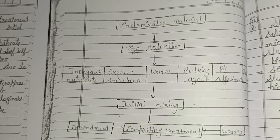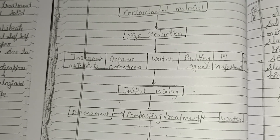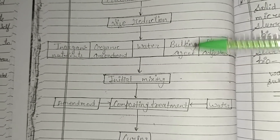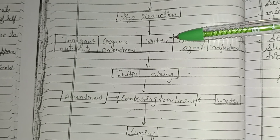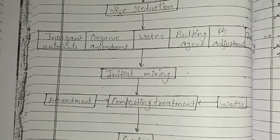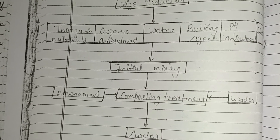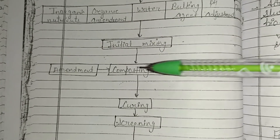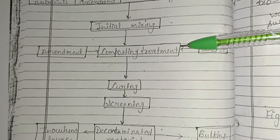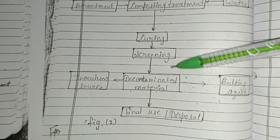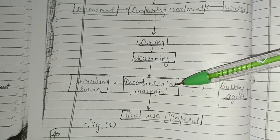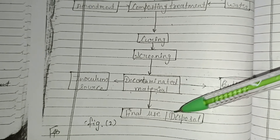This diagram represents the outline of the composting treatment sequence — how compost is prepared from waste. First, a contaminated material is selected, then size reduction takes place. Inorganic nutrients, organic amendments, water, a bulking agent are added, pH is adjusted, and inoculum (microorganisms from another bioremediated site) is added. Initial mixing takes place as the composting treatment, followed by curing, screening, and production of decontaminated material.